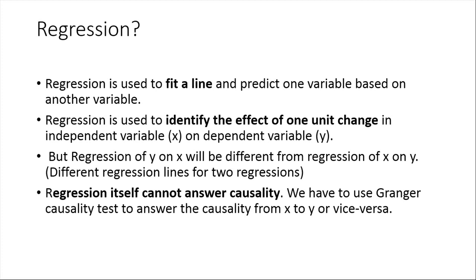Similarly, we can do it the other way as well — we can take X as the dependent variable and run another regression taking Y as the fixed variable. So we can do it both ways: Y on X or X on Y. When we do causality analysis, we do the same thing — we run regression of one variable on another, Y on X or X on Y, and then find some causality between them.